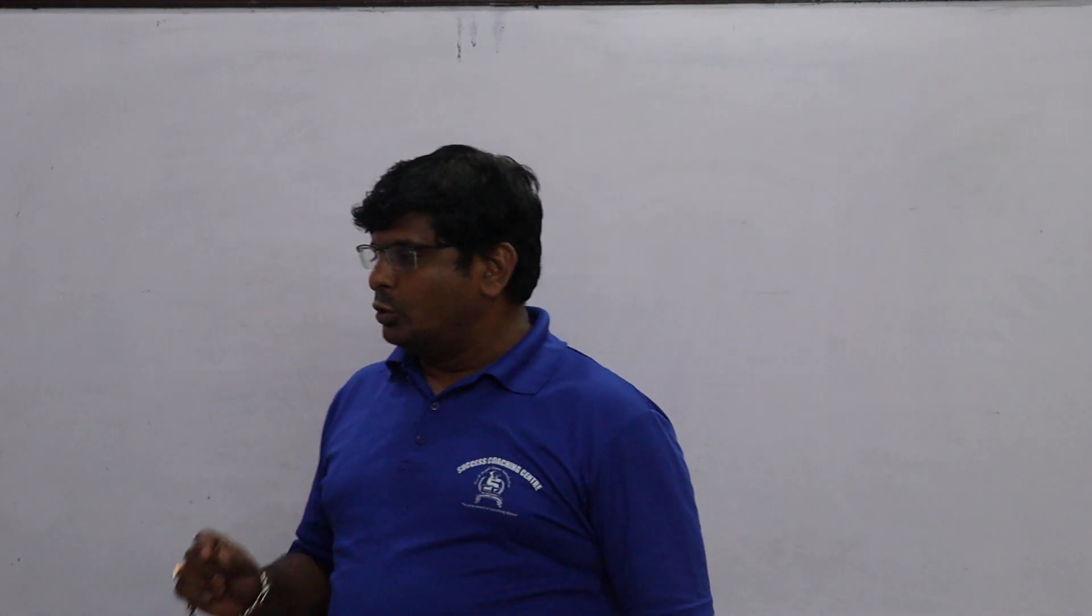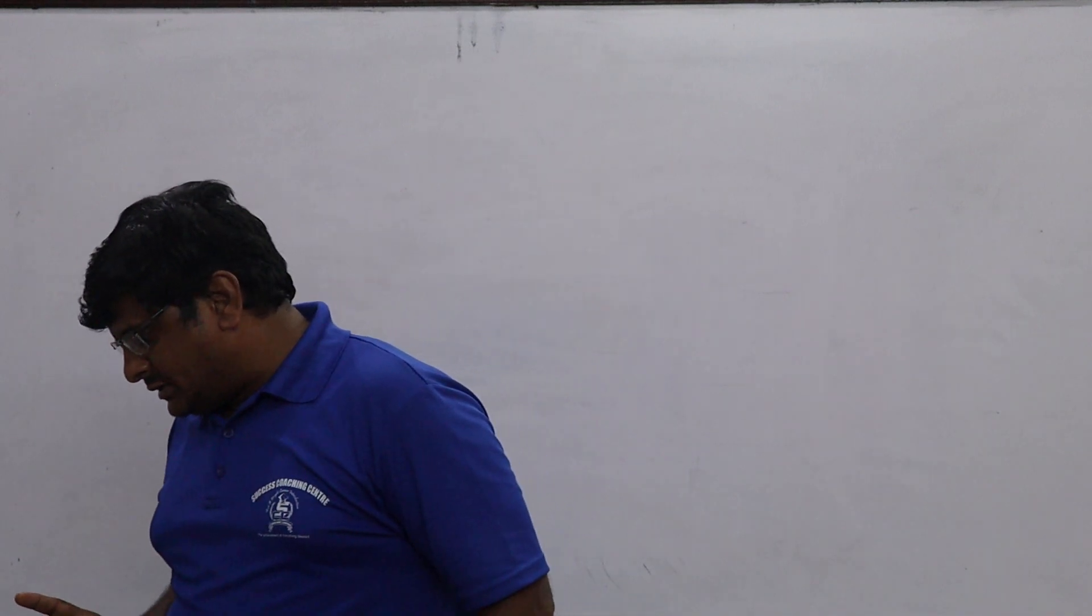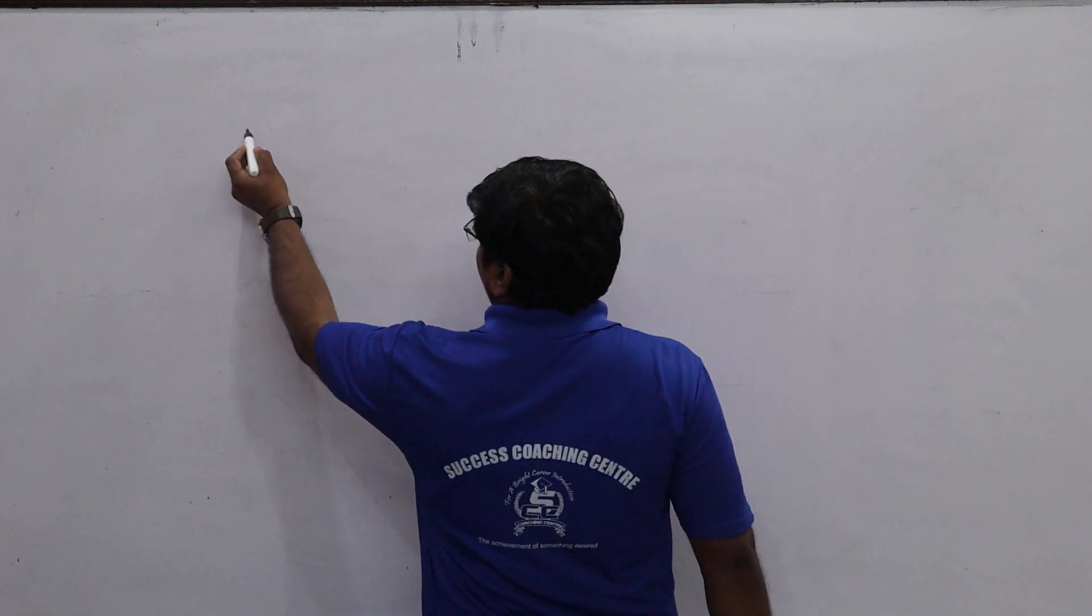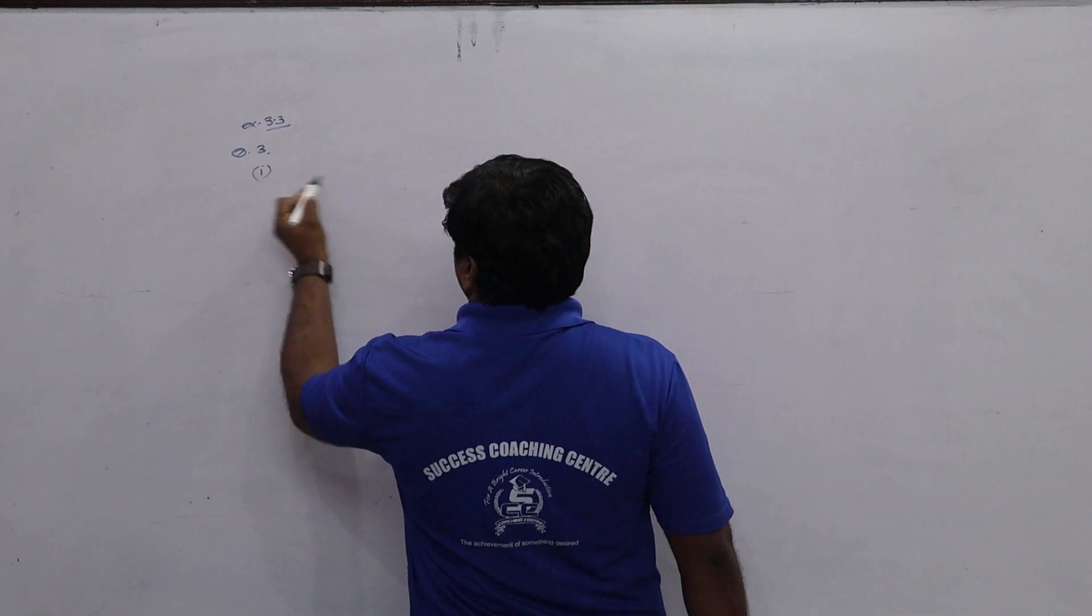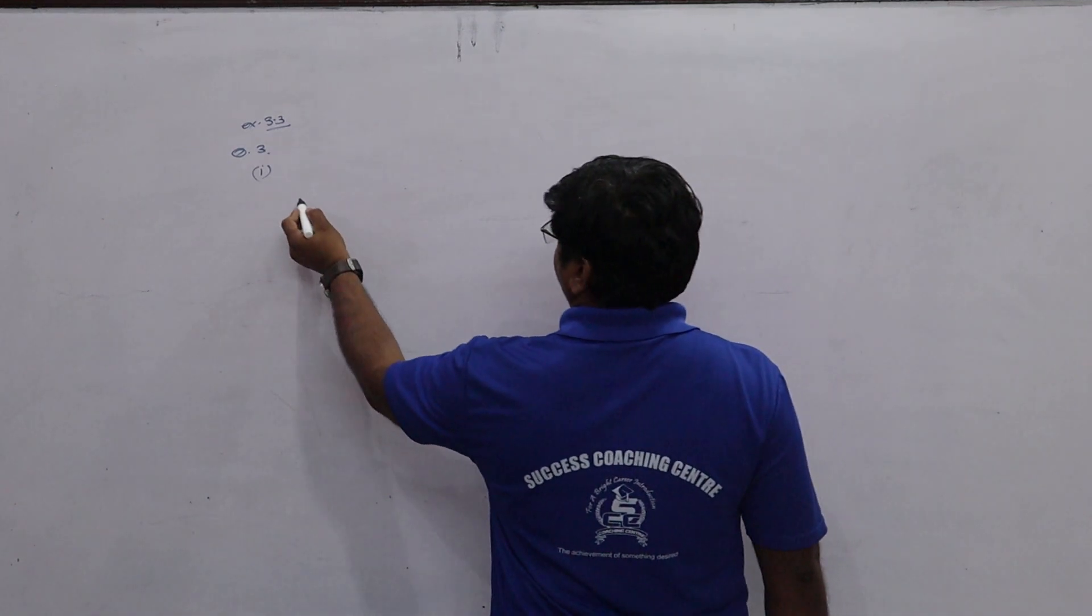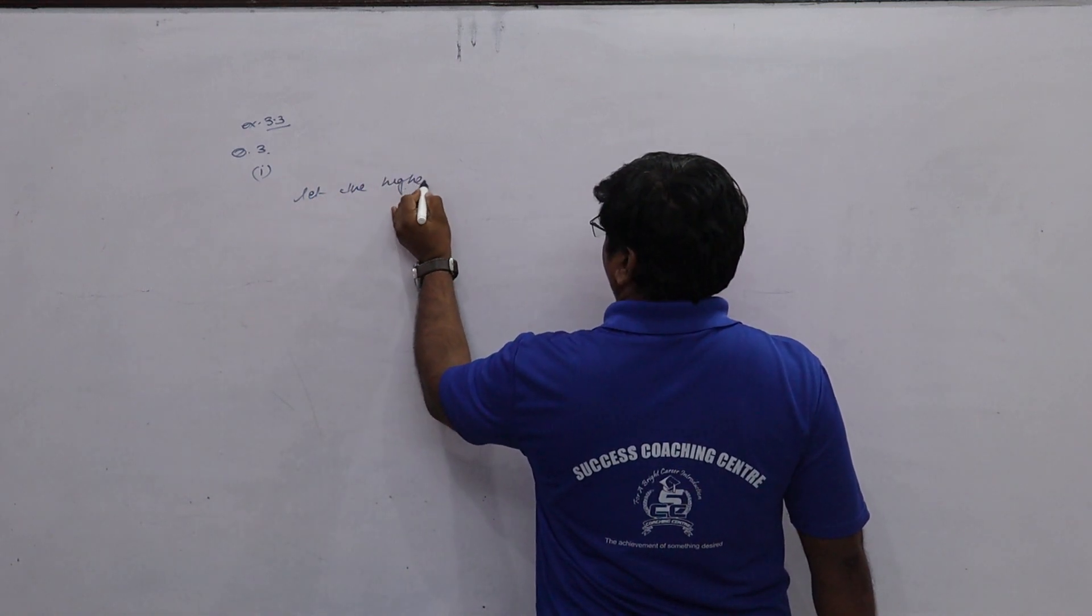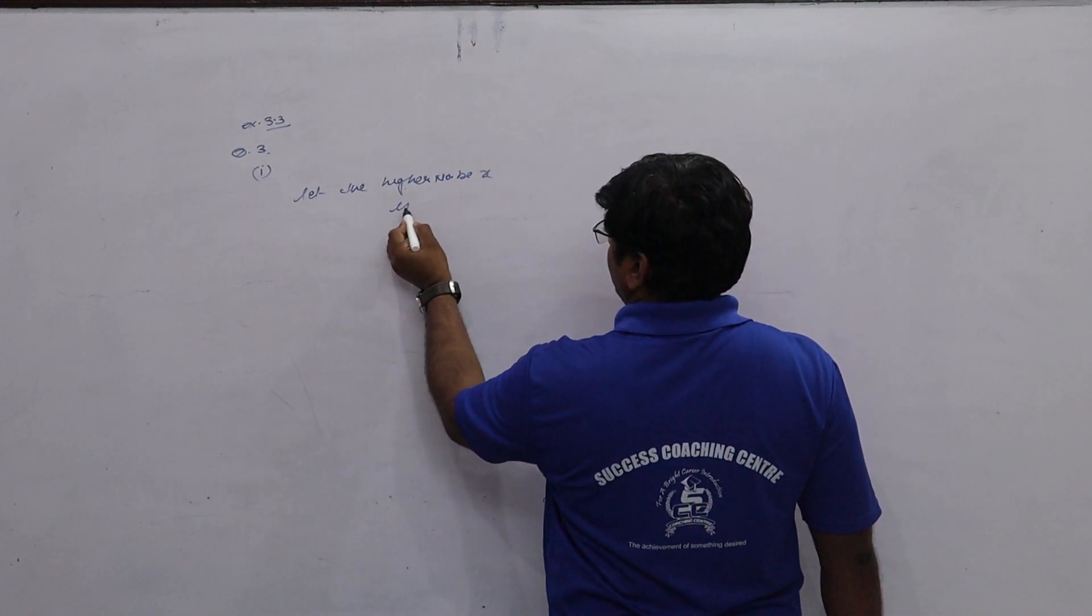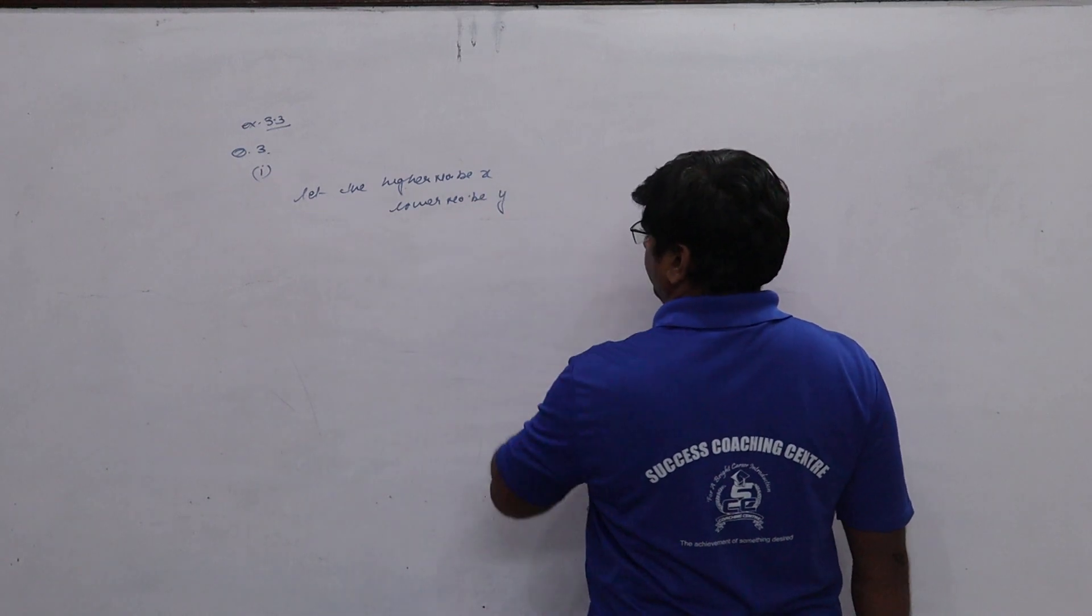The difference between two numbers is 26 and one number is 3 times the other. So what do we do? Exercise number 3.3, Question number 3, Part first. Let the higher number be x and lower number be y.